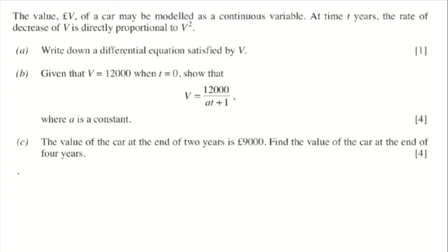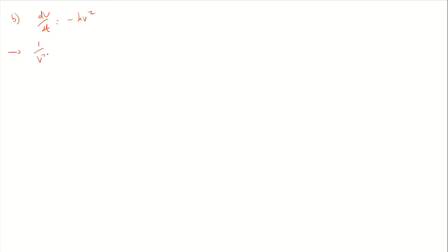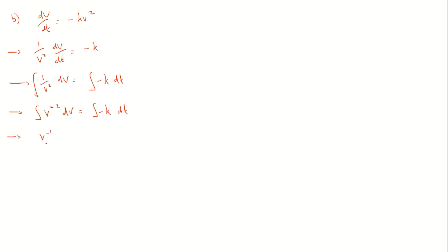Main task question three. The rate of decrease of v is directly proportional to v squared this time, so dv/dt equals negative kv². For part b: write one over v² times dv/dt equals negative k. Integrating both sides with respect to t, after cancellation: the integral of one over v² dv equals the integral of negative k dt. One over v² is v to the minus two; add one to the power and divide, giving negative kt plus C.